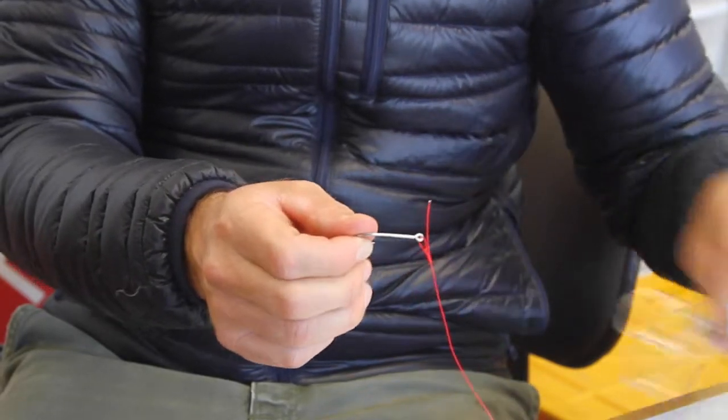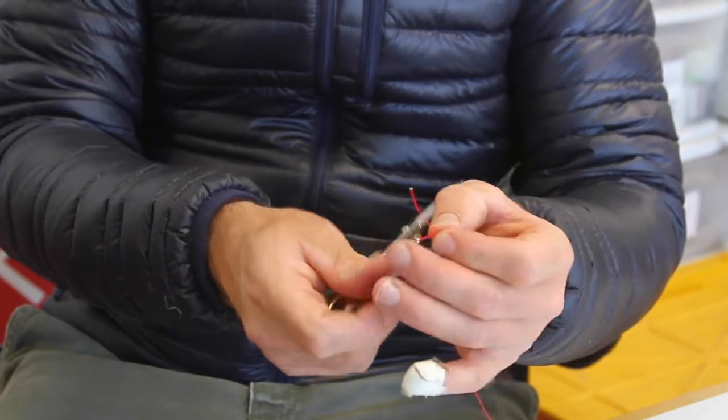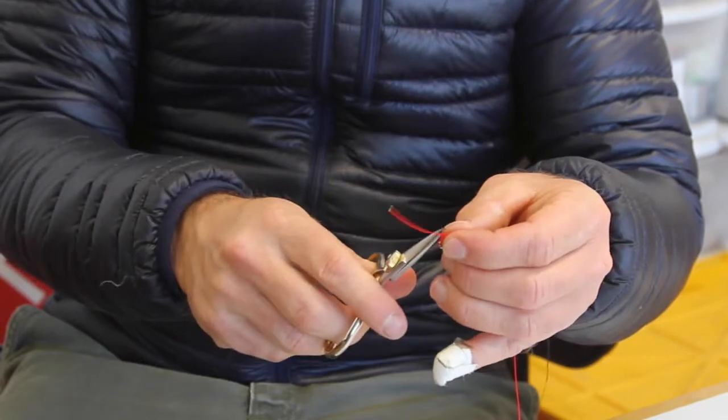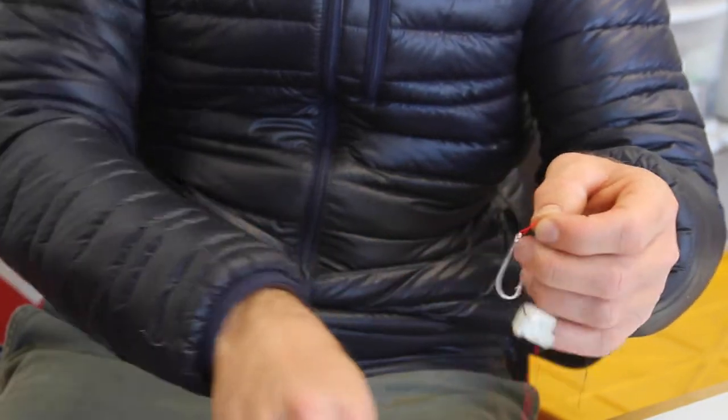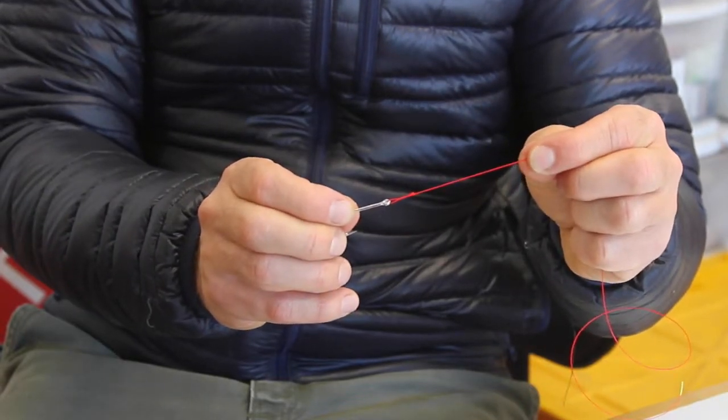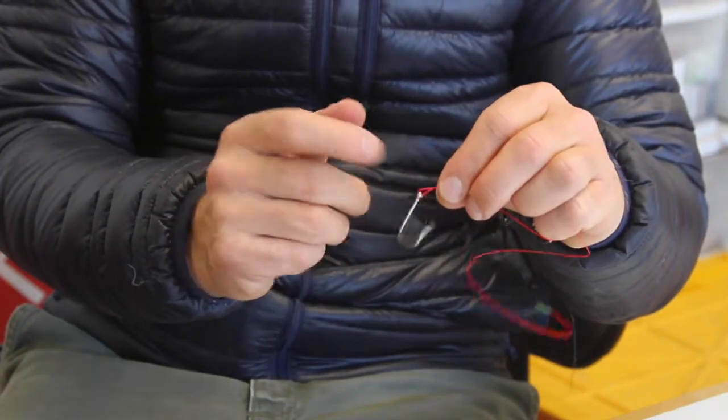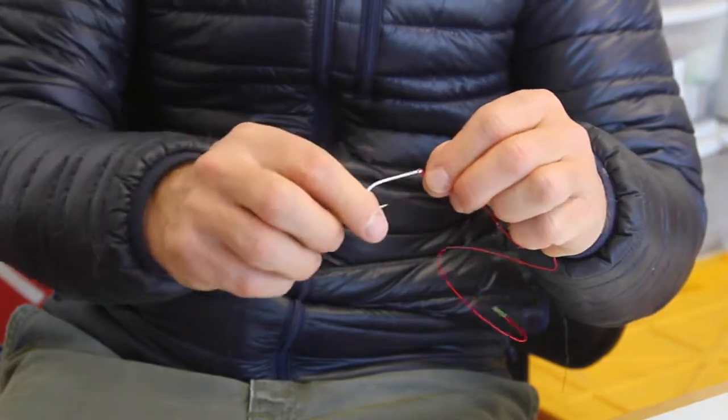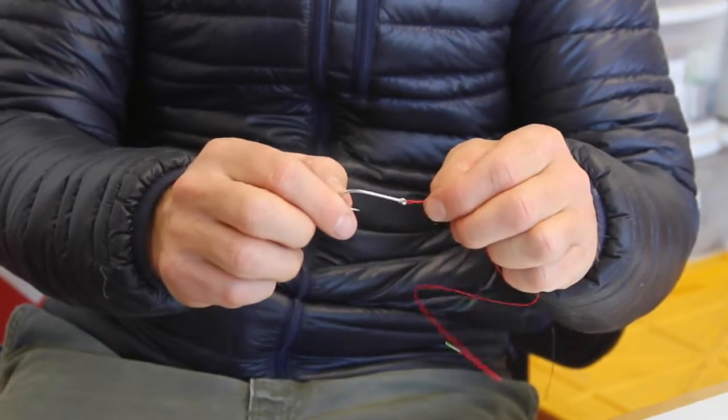Then trim it, leaving just a microscopic tag end. Now your fly can swim freely, and that's the no-slip mono loop.